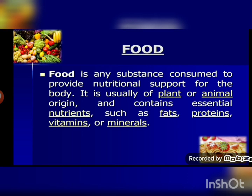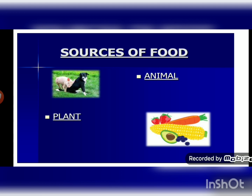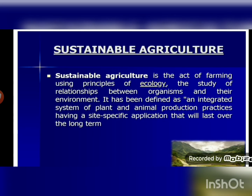Food is any substance which is consumed to provide nutritional support for the body. It helps us to grow, repair our body, and protect our body from diseases. Our food usually comes from two sources: plants and animals. This food contains essential nutrients — proteins, fats, vitamins, carbohydrates, and minerals. We get vegetables, fruits, herbs, and spices from plants, and all non-vegetarian food is provided to us by animals.